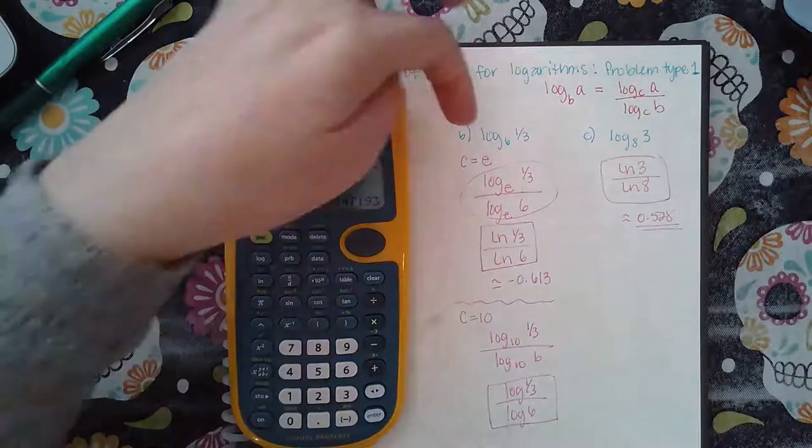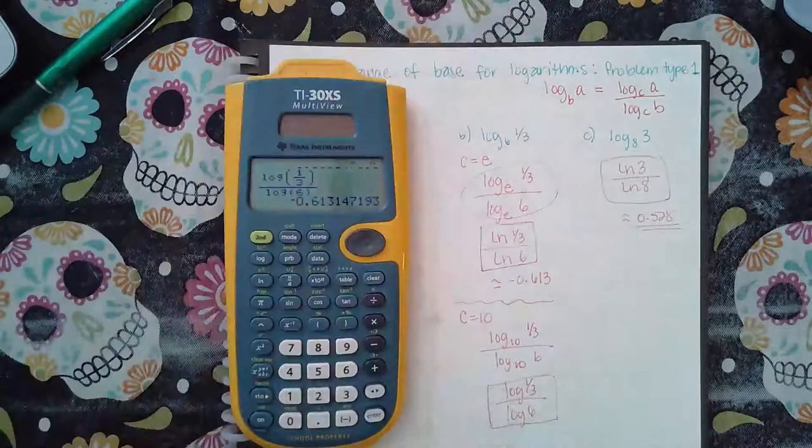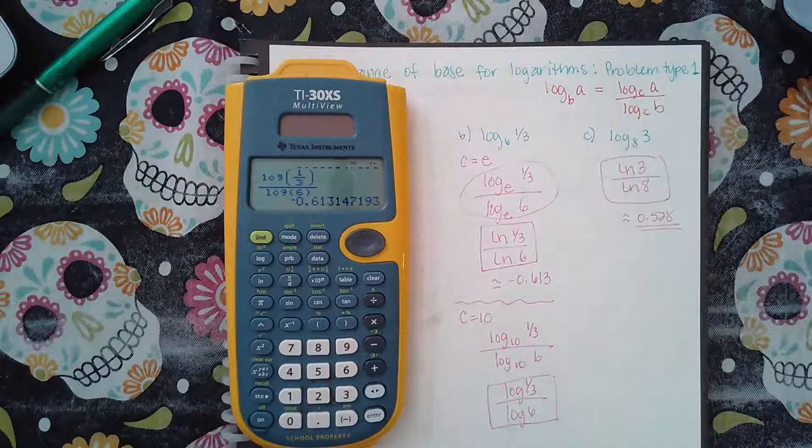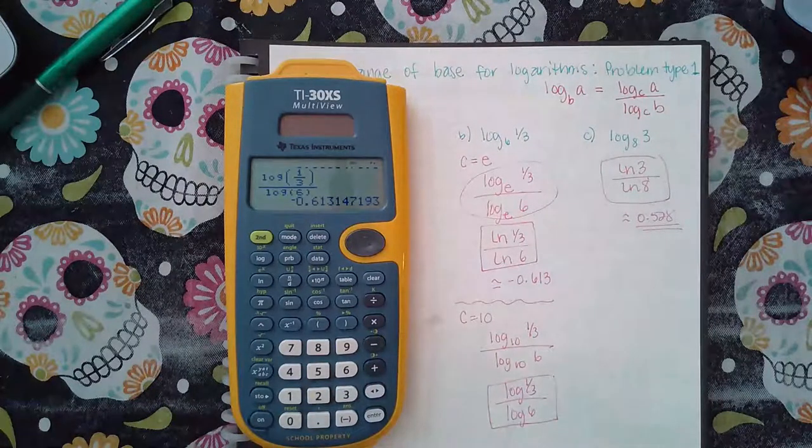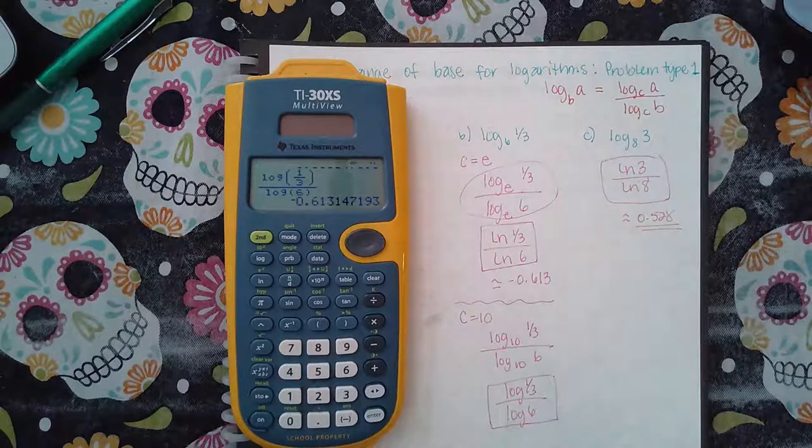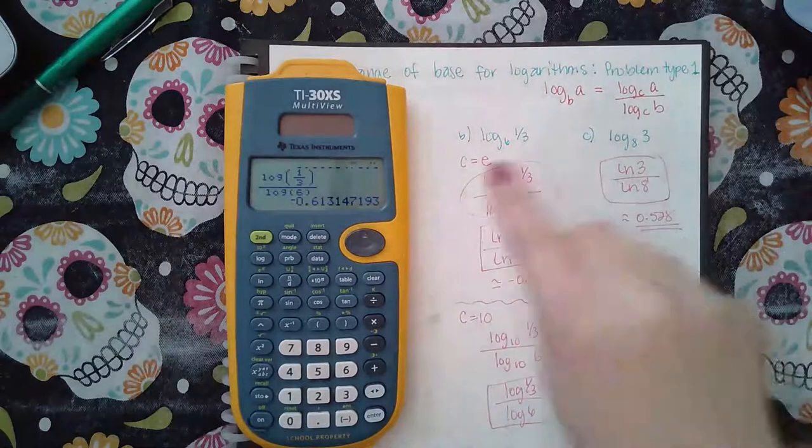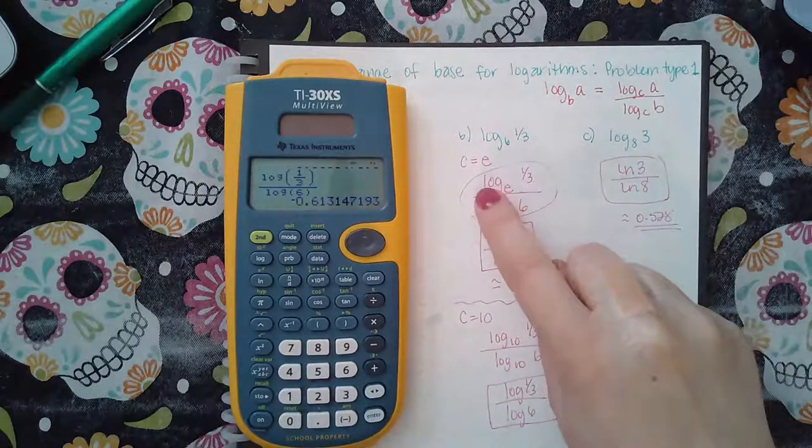Okay, so that either needs to be ln on top and ln on bottom, or log on top and then log at the bottom. Now, me particularly, I like to make it obvious that I change the base. So if I'm given log, I always use ln because the letters changing signifies that I change the base.